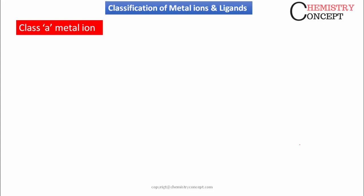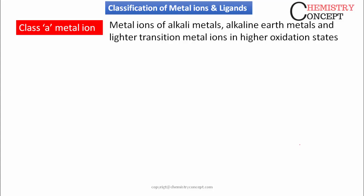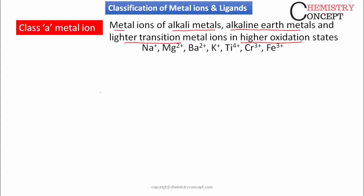Metal ions are classified into two groups: Class A metals and Class B metal ions. Class A metal ions include the metal ions of alkali metals, alkaline earth metals, and the lighter transition metal ions in their higher oxidation state. For example, chromium and iron in their higher oxidation state. Iron has oxidation states of +2 and +3, so here we include Fe3+, which is the higher oxidation state.